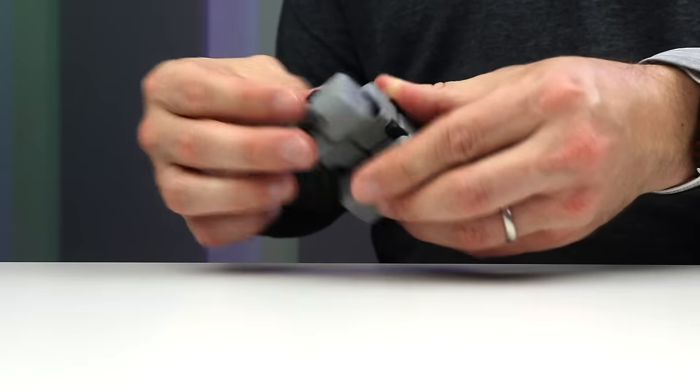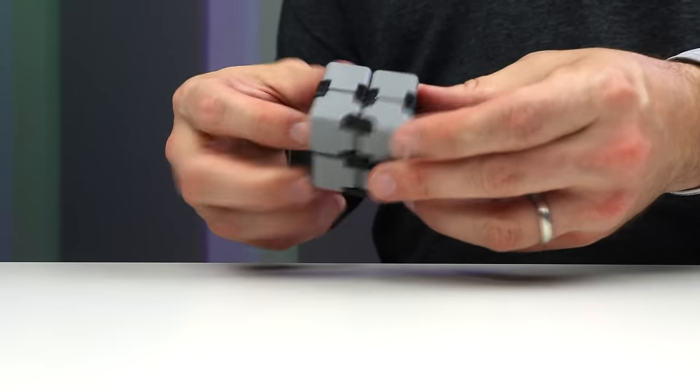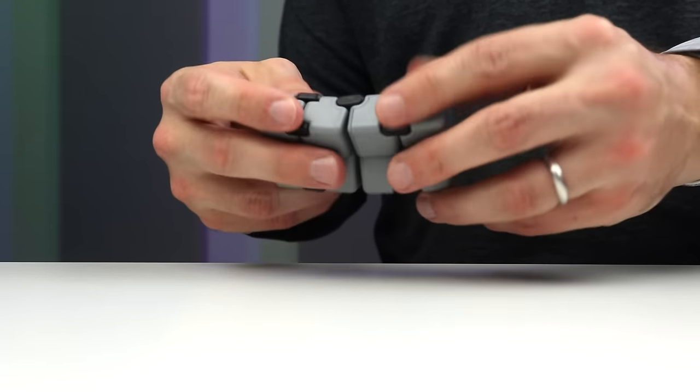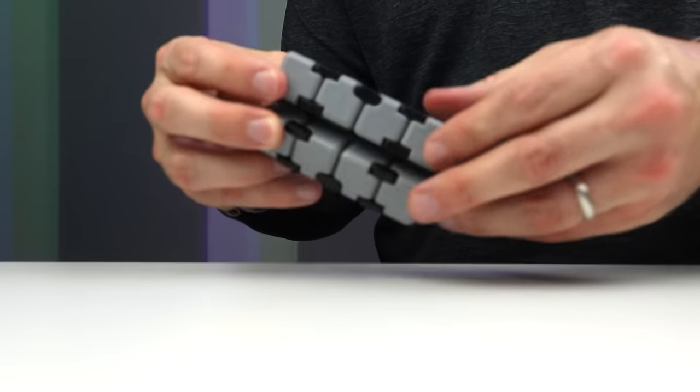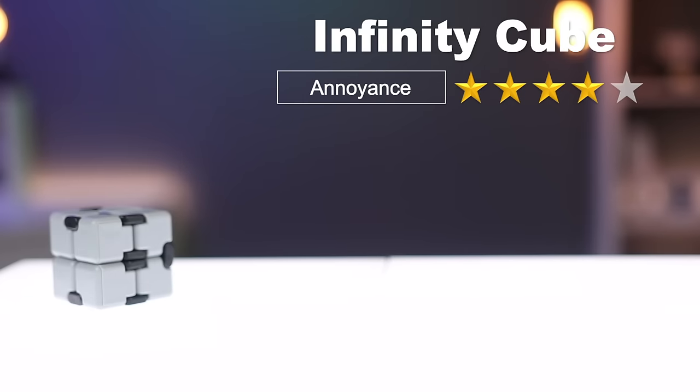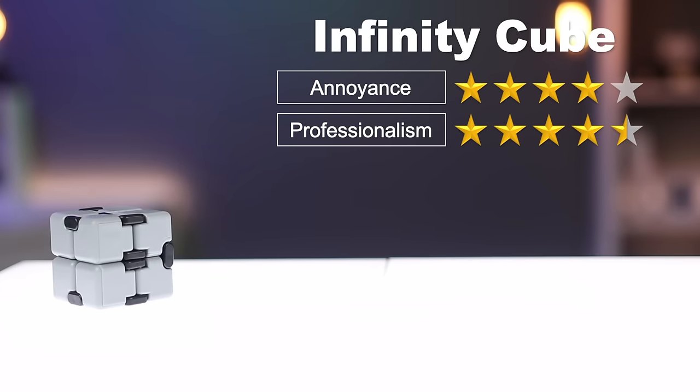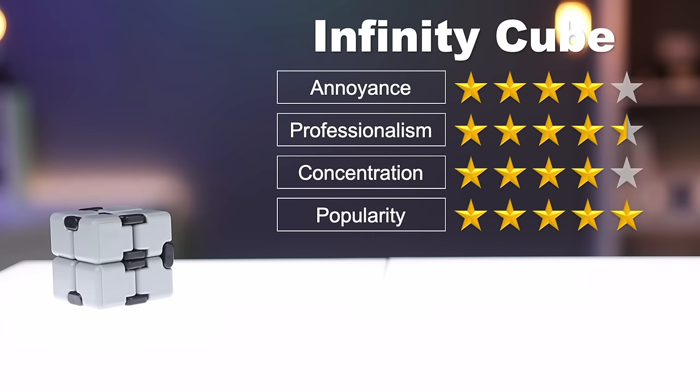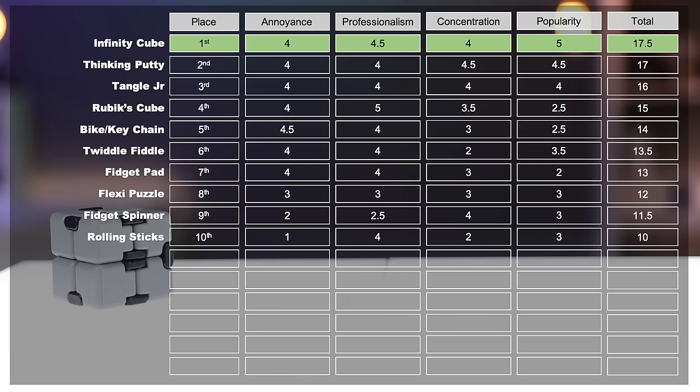The infinity cube can be plain or have pictures on it and it's often given away as a promotional item by companies. You can do endless fidgeting with it with two hands or even one hand. And because of this, it gets four stars for annoyance, four and a half stars for professionalism, four stars for concentration and five stars for popularity. This puts it right at the top of the pack.